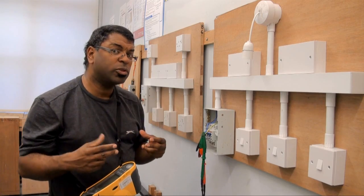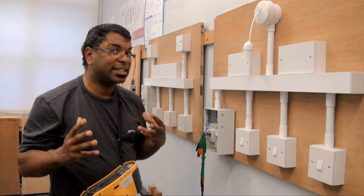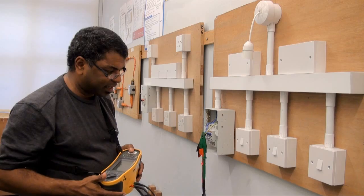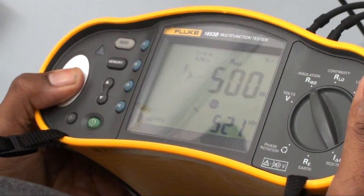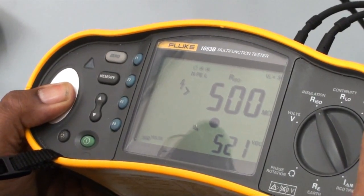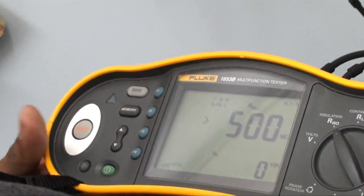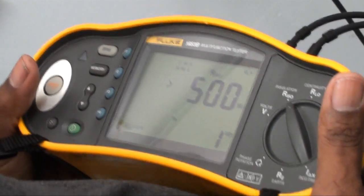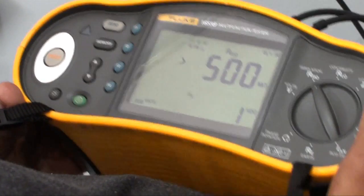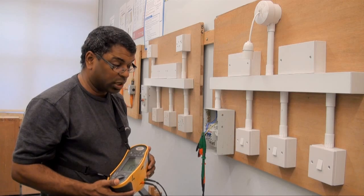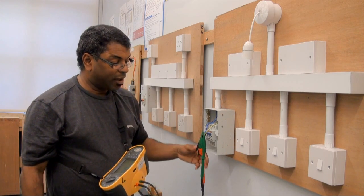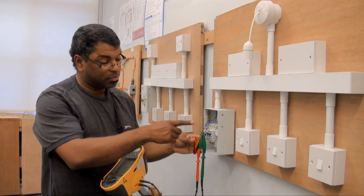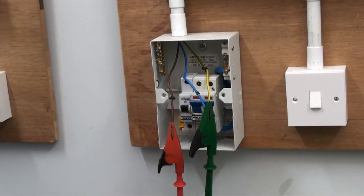So I'm going to carry this test out now. I'm going to press my test button and between line and neutral and CPC I have got 500 mega ohms. That is absolutely great.